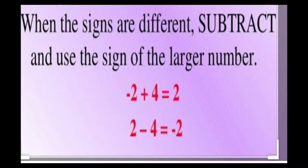Now rule number two: when the signs are different, subtract and use the sign of the larger number. When one integer is positive and the other is negative, subtract the smaller number from the greater number and use the sign of the greater number.